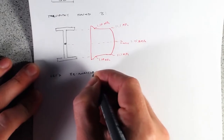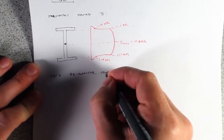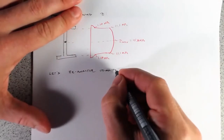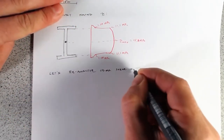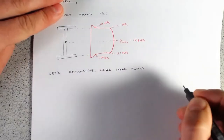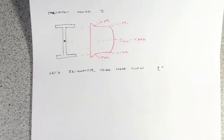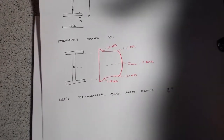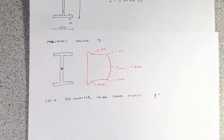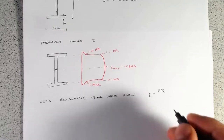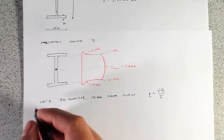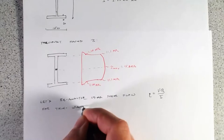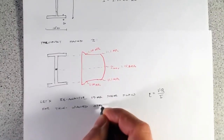Let's reanalyze using shear flow. Our shear flow is just lowercase q, which equals V times uppercase Q divided by I, for thin-walled open sections.